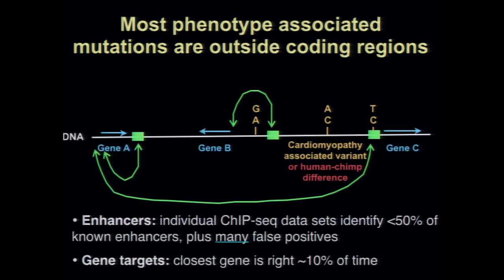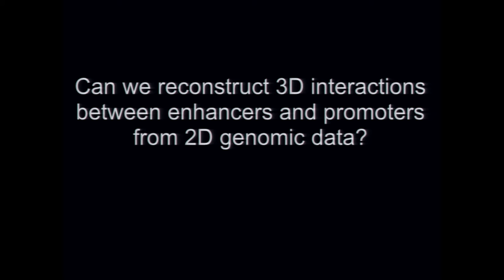When we do a gene ontology enrichment or some functional follow-up study, we're actually pursuing the wrong functions, the wrong genes, and the wrong pathway. I'm going to assume initially that we know the enhancers, and focus on the question of predicting the gene targets. The question is: can we reconstruct 3D interactions between enhancers and promoters from 2D genomic data?